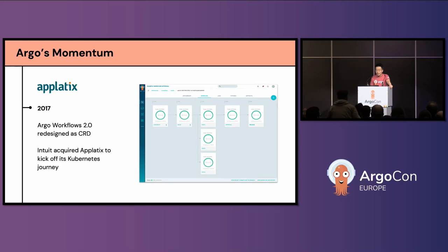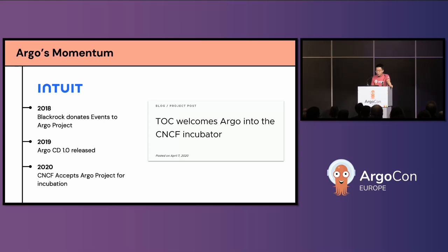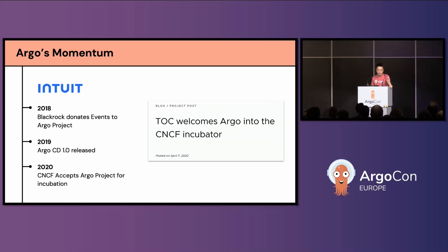Soon we got acquired by Intuit, and Intuit asked us to help kick off their Kubernetes journey. After we joined Intuit, we had tremendous support from the company to execute on our vision — not only development resources, but also the best possible customer to validate our ideas, which was Intuit itself. New ideas, what turned out to be new projects, were added to the Argo family quickly: Argo CD, Argo Rollouts, and Argo Events from BlackRock. In 2020, we donated the Argo project to CNCF, and that basically started another chapter.